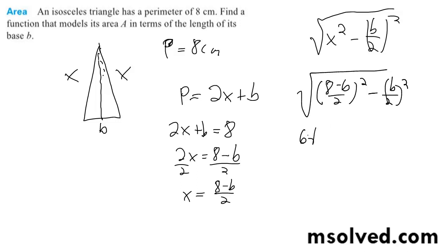We get 64 minus 16b plus b squared minus b squared all over 4. So, the b squareds cancel out, and this becomes a 16, this becomes a 4.